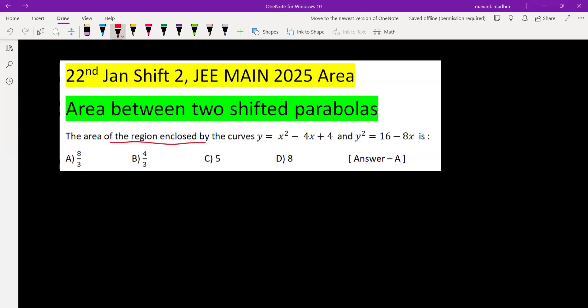We need to find the area of the region enclosed by these two curves, both of them are shifted parabolas. The first one is y equal to x minus 2 whole square, which is upward in nature.